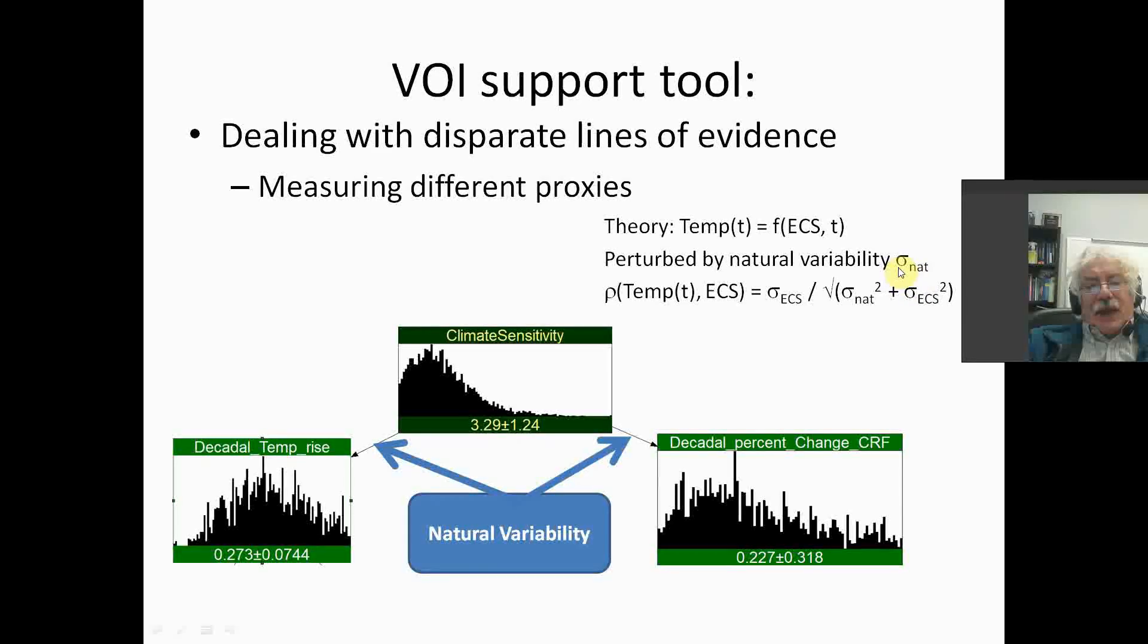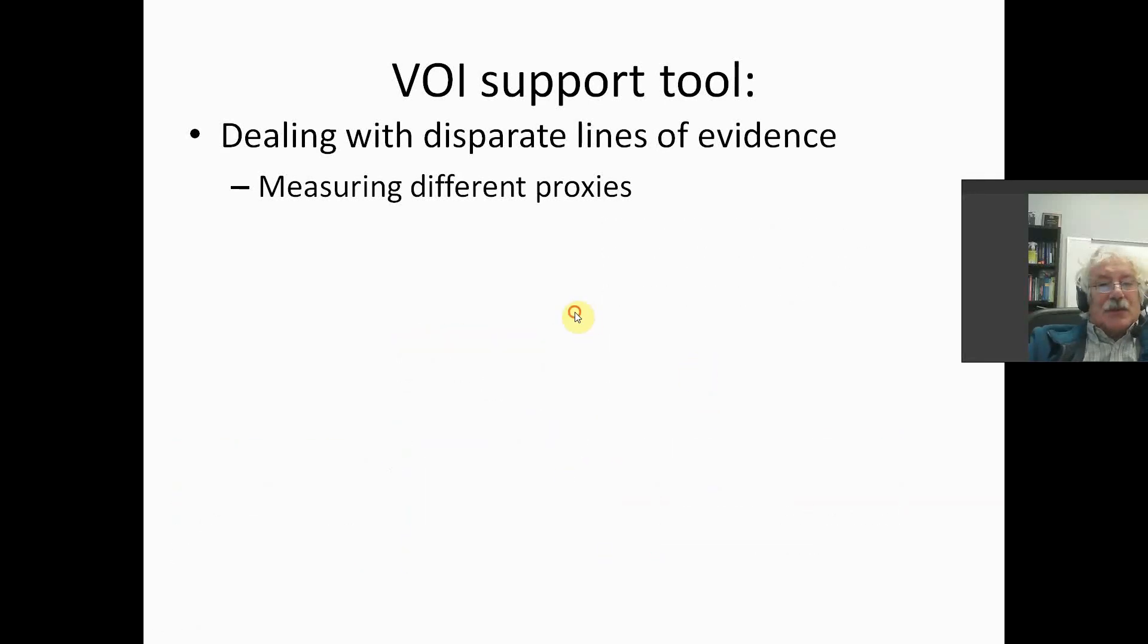Because of that, we can represent the relationship between temperature at time T and ECS as a correlation, which is computed with this formula. We can quantify the effect of natural variability and use that to express the strength of the relationship between climate sensitivity and these proxy variables.